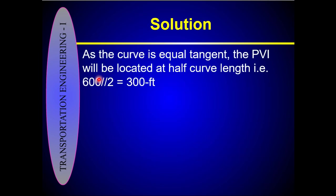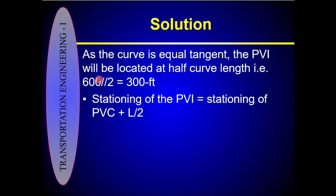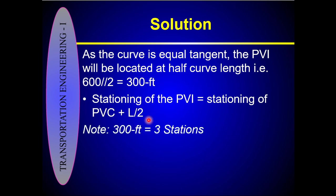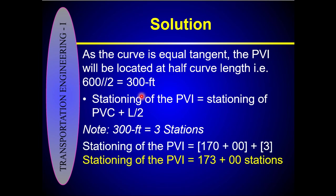Let's calculate the first parameter: the stationing of the PVI. The stationing of the PVI equals the stationing of the PVC plus half the curve length. The curve length is 600 feet, so half is 300 feet, which equals 3 stations. Therefore, the stationing of the PVI is 170 + 3 = station 173.